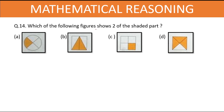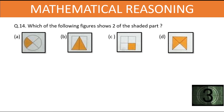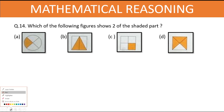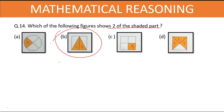Which of the following figures shows two shaded parts? Marking the shaded portions — the first one has one, the second has two equal shaded portions, the third has one, and the fourth has three shaded portions. The two shaded portions are in option B, which is our answer.